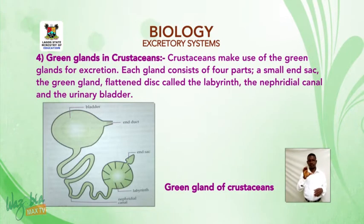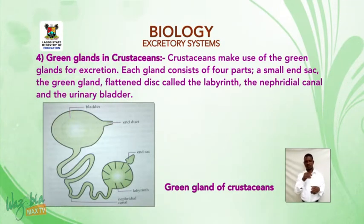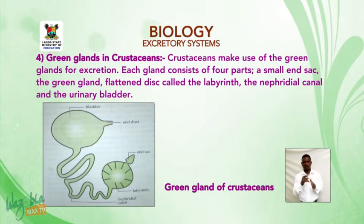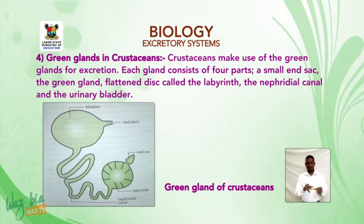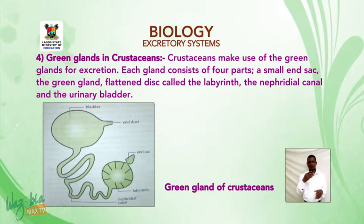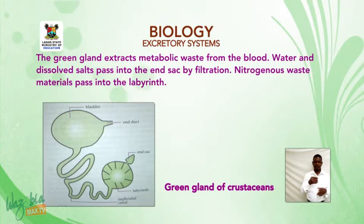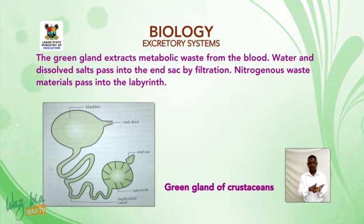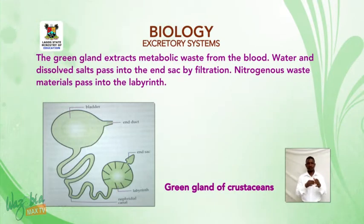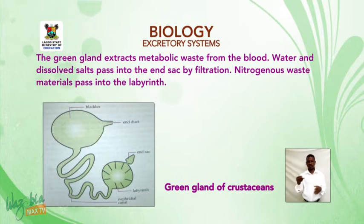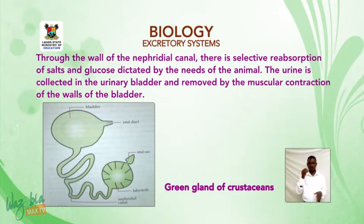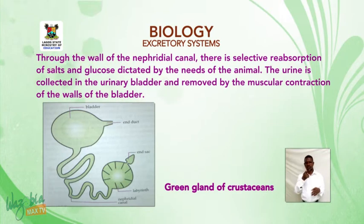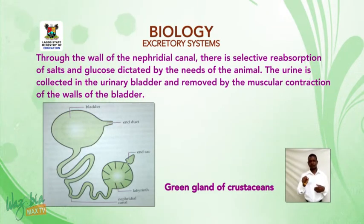Crustaceans make use of green glands for excretion. Each gland consists of four parts: a small end sac, a flattened disc called the labyrinth, the nephridial canal, and the urinary bladder. The green gland extracts metabolic waste from the blood. Water and dissolved salts pass into the end sac by filtration; nitrogenous waste materials pass into the labyrinth through the wall of the nephridial canal, with selective reabsorption of salt and glucose.